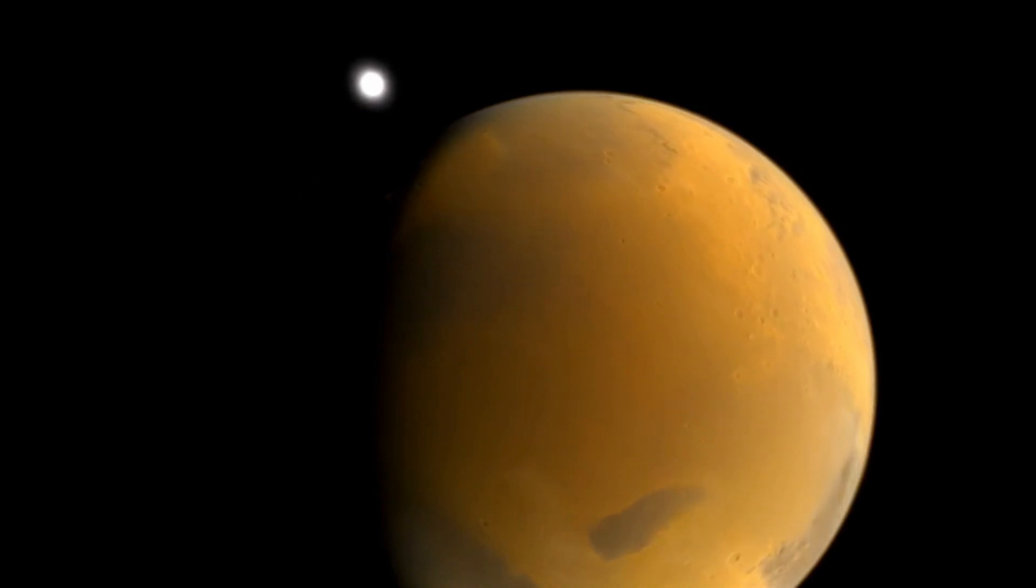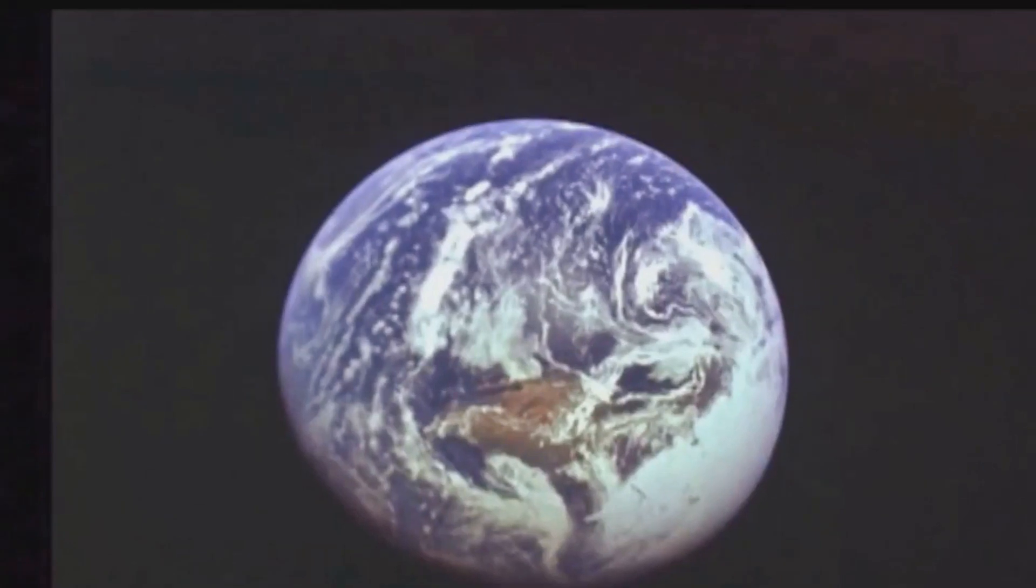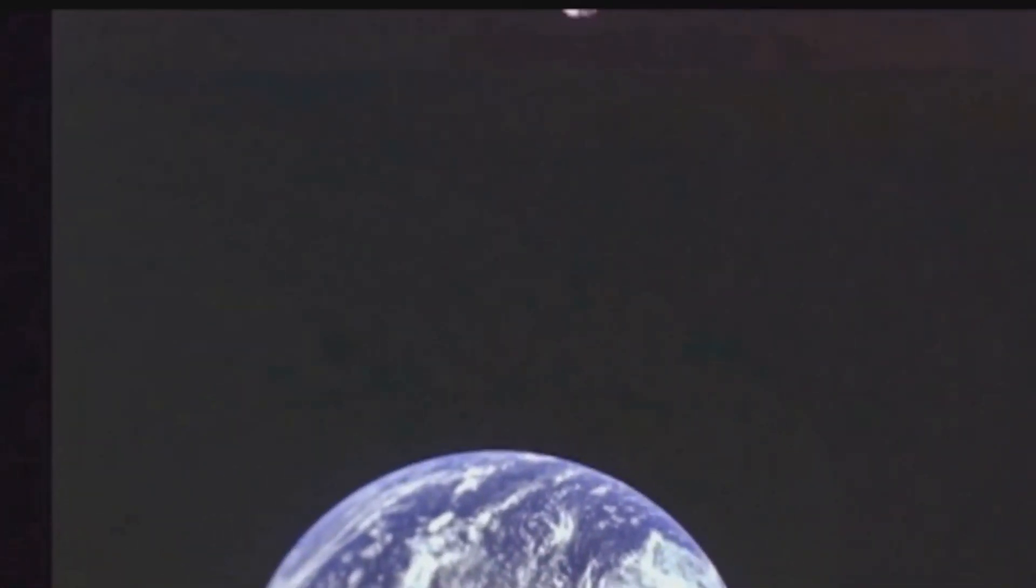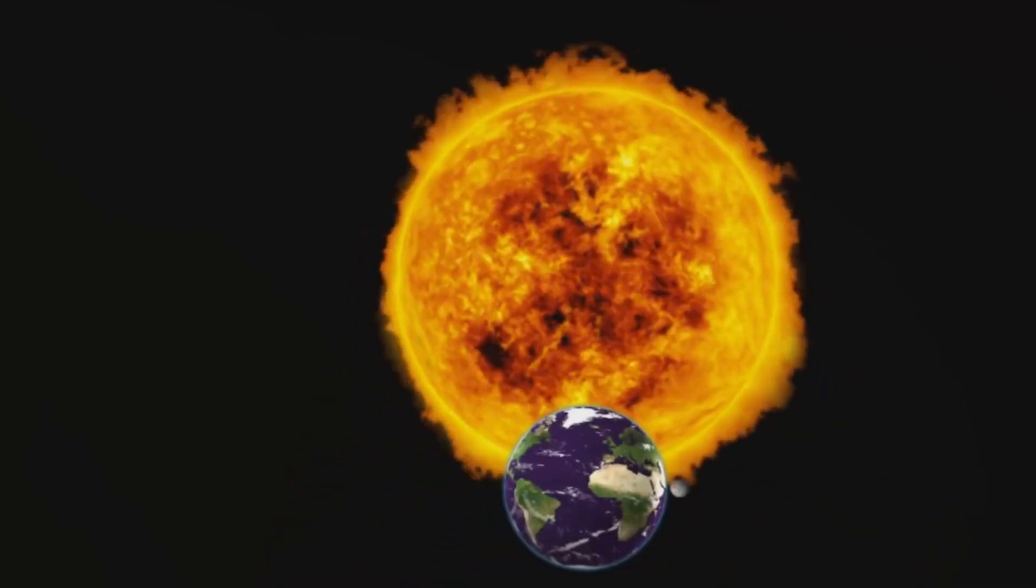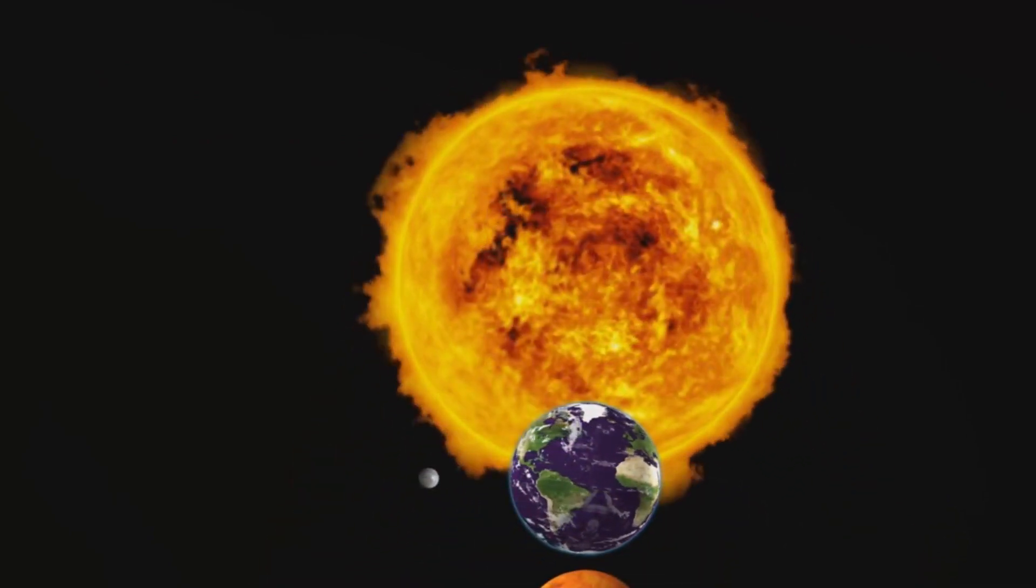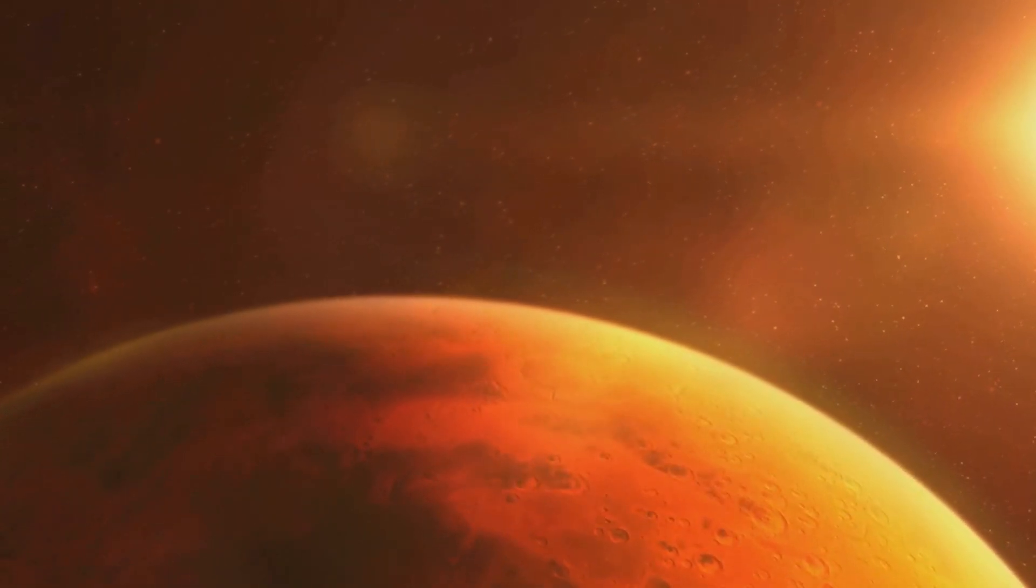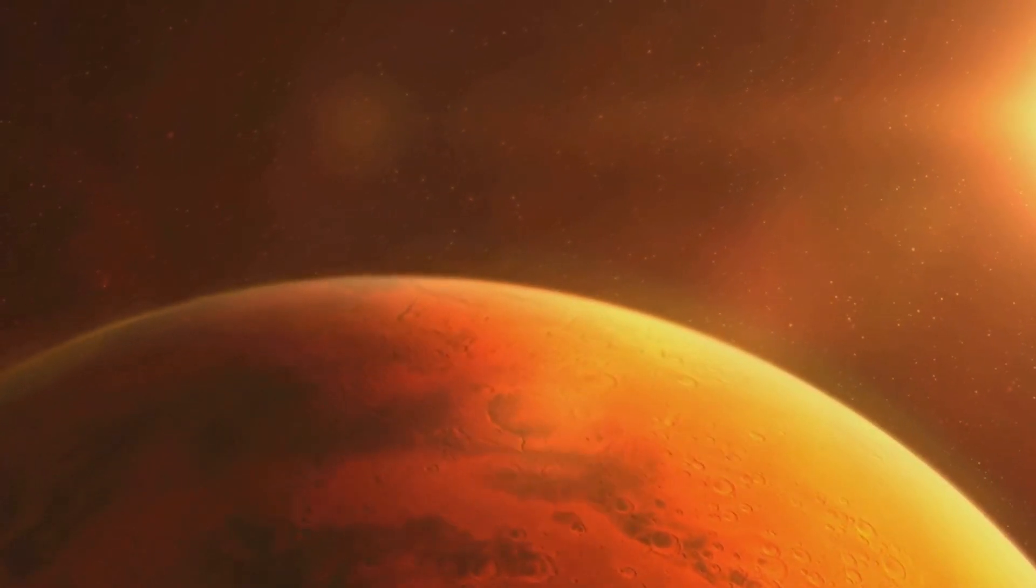Earth, being larger than Mars, acquired more heat during its formation and has been able to retain it. When a planet's size is doubled, its surface area quadruples, but its volume becomes eight times larger. Thus, larger planets release heat more slowly than smaller ones. In essence, Earth is less efficient than Mars at shedding its heat.